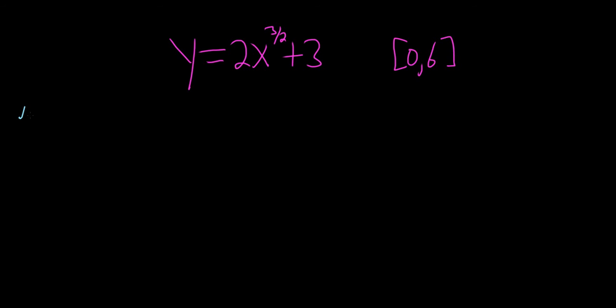So the formula for the arc length is the following. Little s is equal to the definite integral from a to b of the square root of 1 plus y prime squared, and then dx.